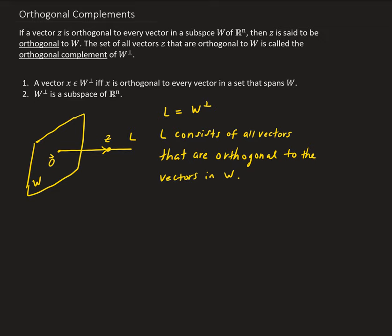The idea here is that if we have a subspace represented by the plane, and we're going to call that W, and then we have another vector space called L that is extruding from W, and then we have a vector Z — so any vector on L, when we dot it with any vector in W, is going to be zero.